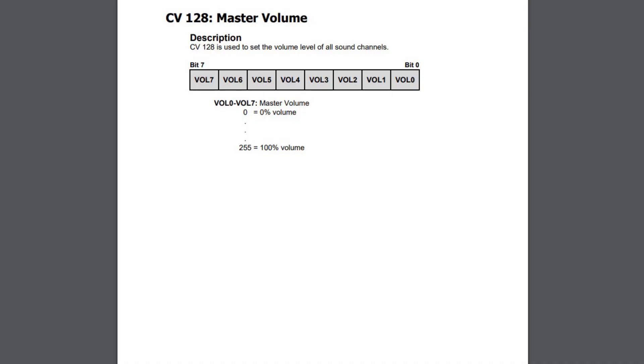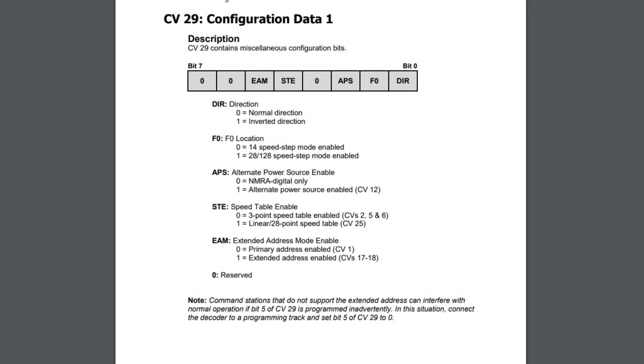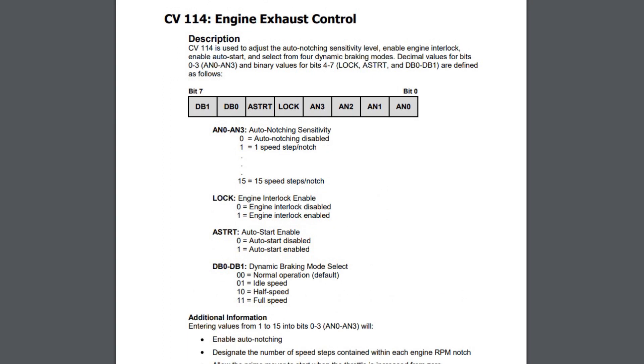Now the term CV covers a basic structure, and all CVs are structured exactly the same way, no matter what the purpose of the CV is. Whether you're talking about a volume percentage CV such as 0 to 255 equals 0 to 100 percent, or another CV like CV 29 or CV 114 in their diesel decoders, where individual bits do various different things. A CV is structured by 8 bits and each bit has a number.